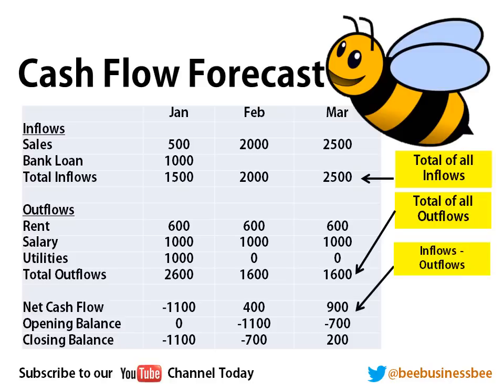My net cash flow is simply your total inflows each month minus your total outflows. You want to have a positive cash flow. In my first example, I've got a negative cash flow in January of minus 1,100. In February it's positive 400, and in March it's positive 900. So it's going quite well — it's starting to pick up after the first month of trading.